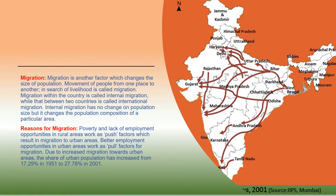Migration is another factor which changes the size of population. Movement of people from one place to another in search of livelihood is called migration. Migration within the country is called internal migration, while that between two countries is called international migration. Internal migration has no change on population size but it changes the population composition of a particular area.